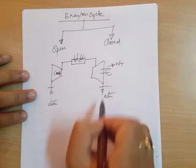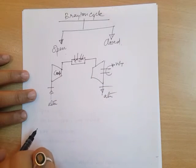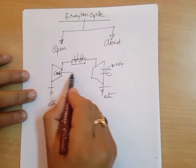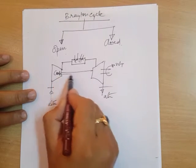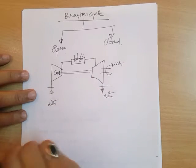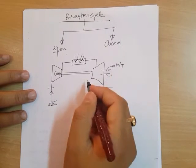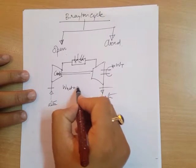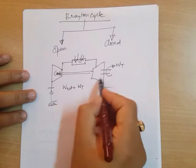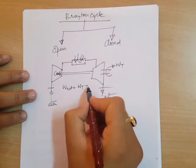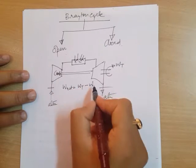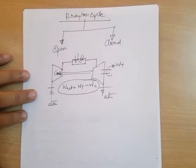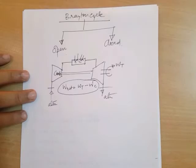In the open Brayton cycle, the net work is simply turbine work minus the work required by the compressor.